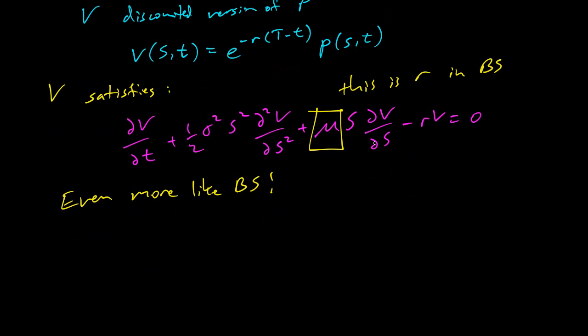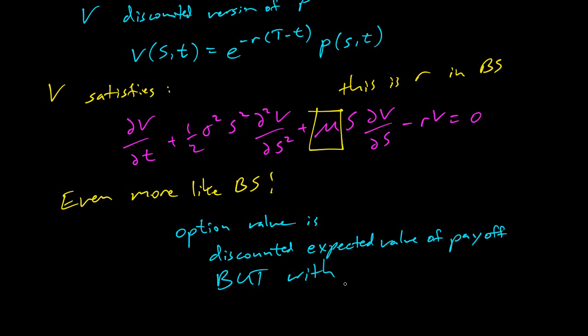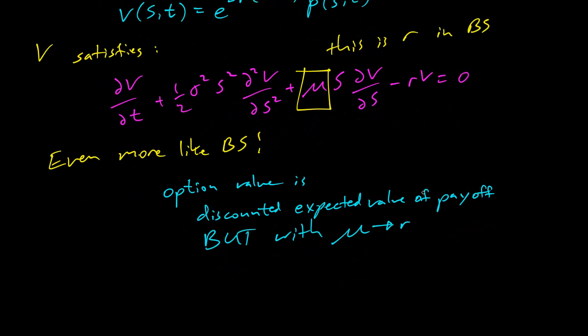So we know that Black-Scholes is the value of an option, and so this is the discounted expected value of the payoff. We can say that an option value is discounted expected value of payoff, but with mu going to r.